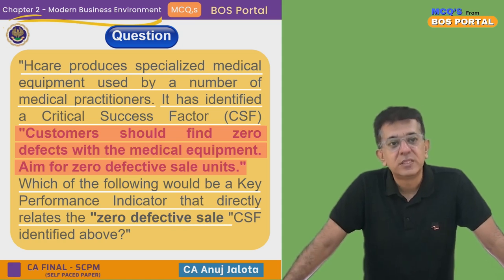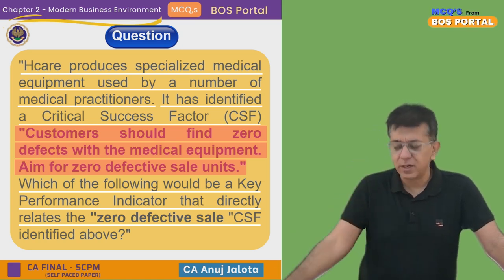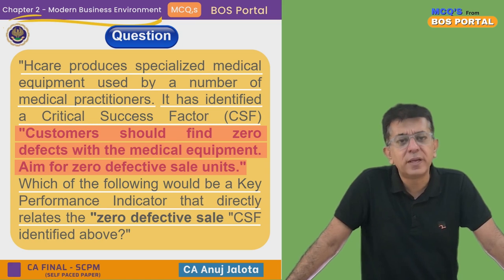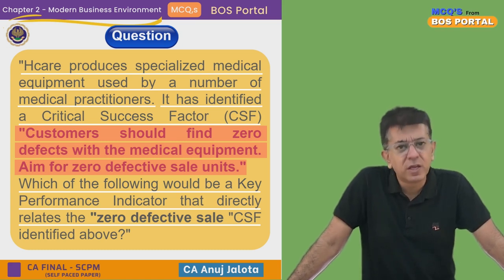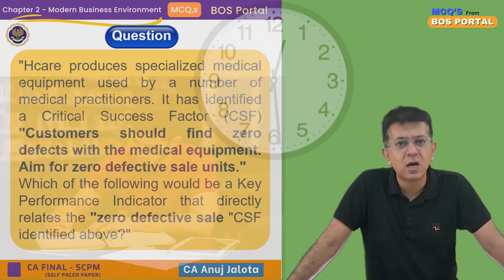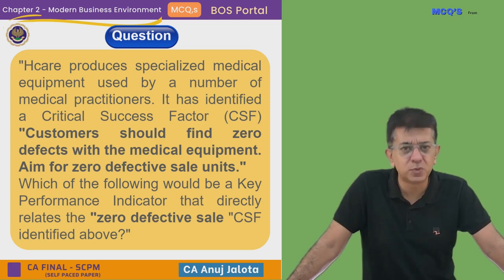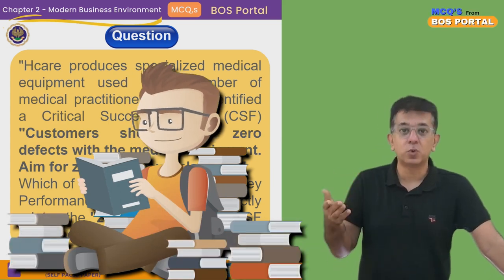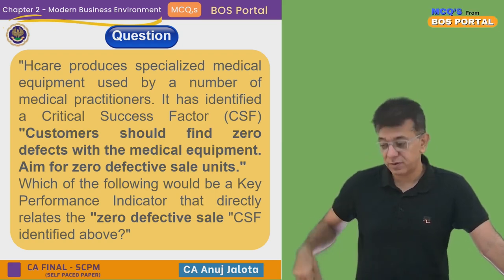Which of the following would be a KPI — Key Performance Indicator — that directly relates to the zero defective sale CSF identified above? There are two things: CSF and KPI. For example, if you want to get a rank in CA Final, that is your objective — your CSF. But then you should always be measuring whether you will achieve your aim or not. How will you measure that? By how many hours you study, how much portion you have completed three months before, two months before, one month before, how many revisions you've done, how many mock papers you've given, and what marks you scored in mock papers — these are all KPIs.